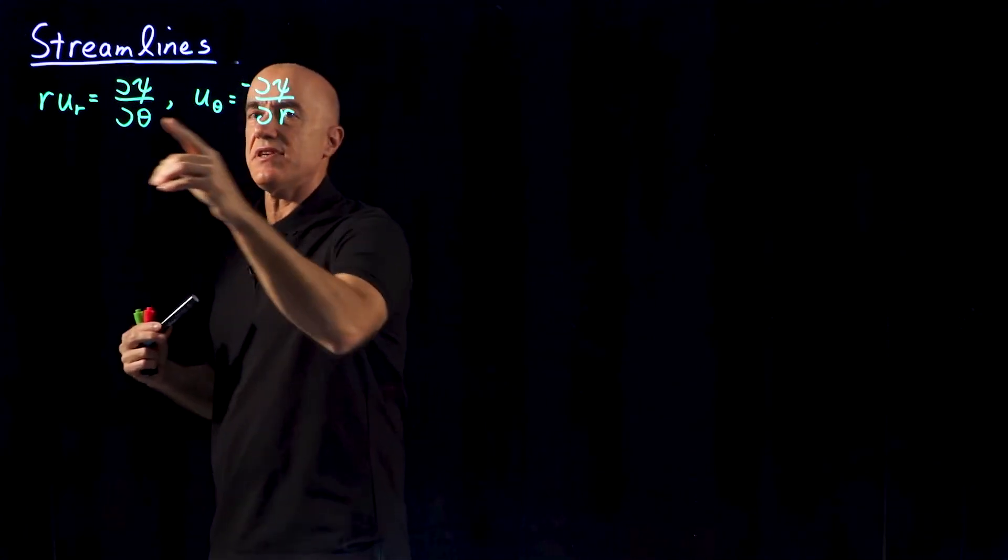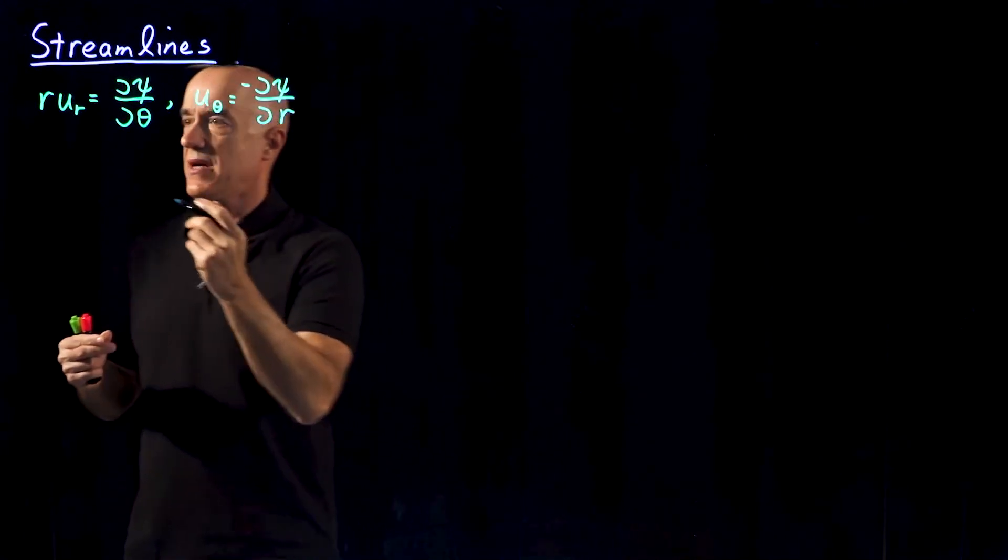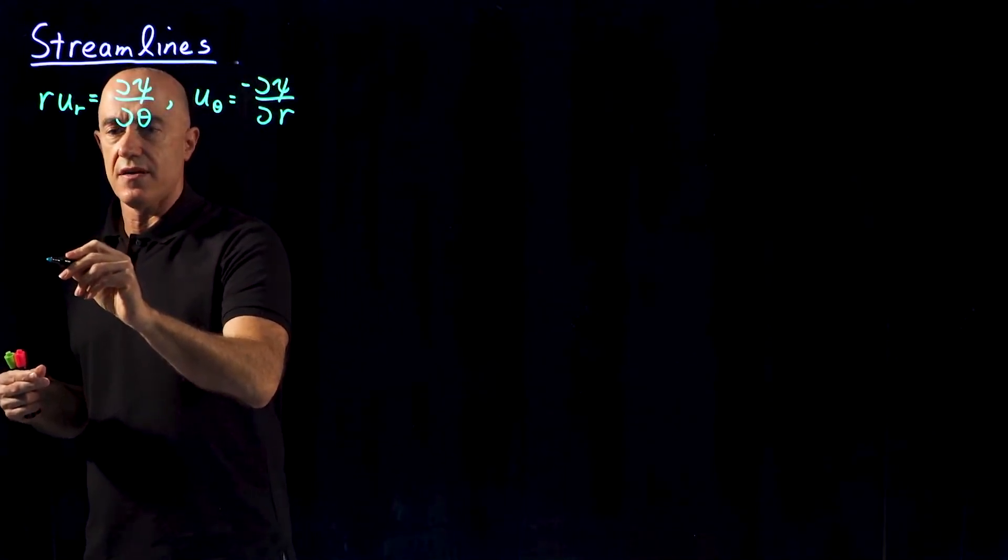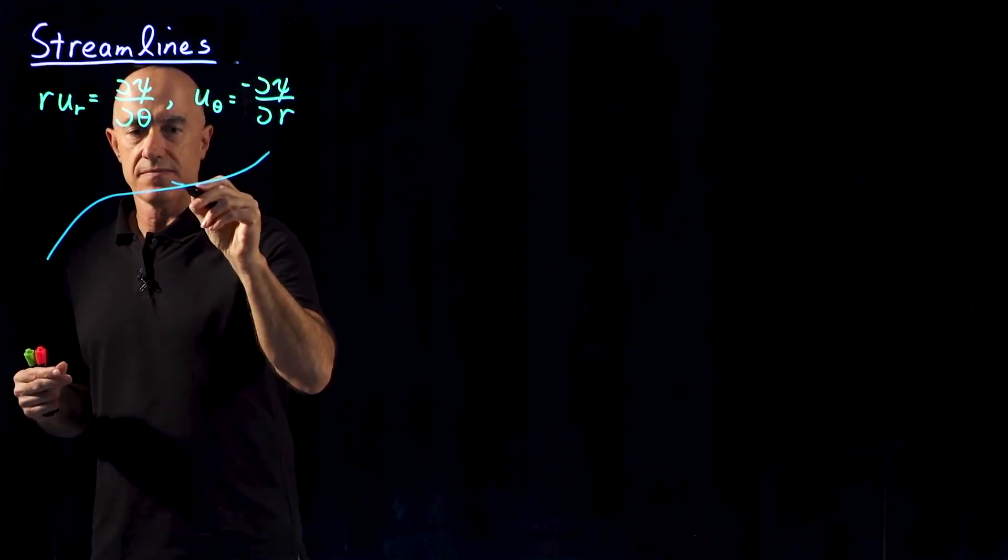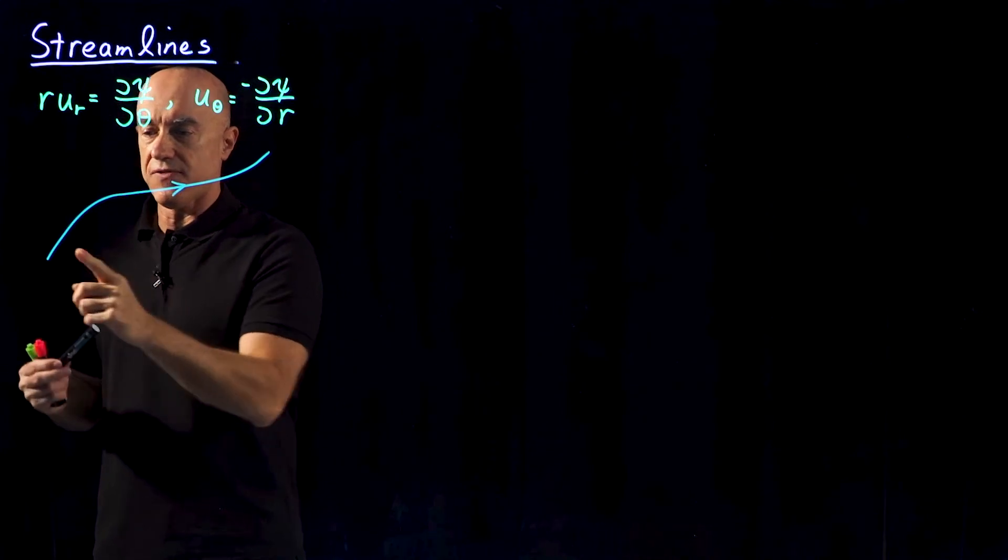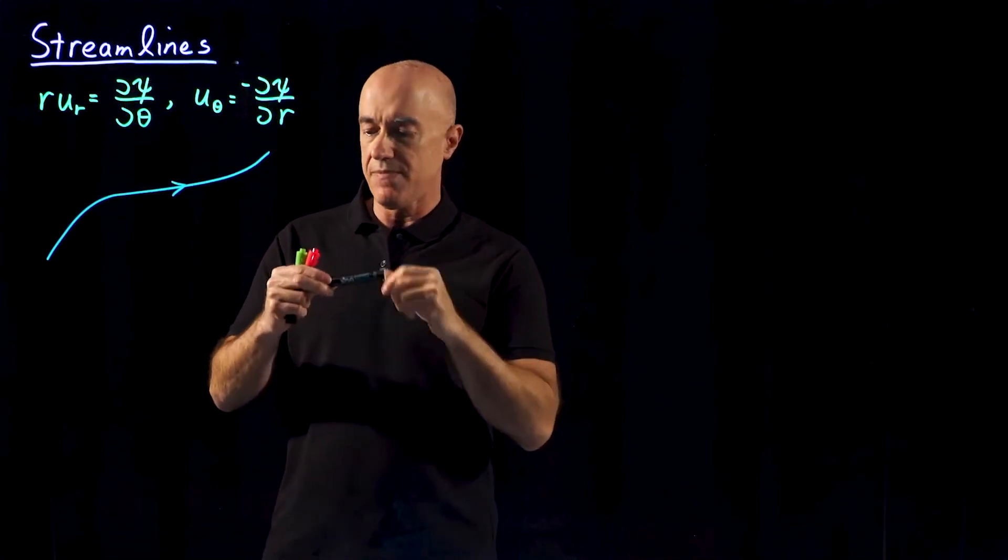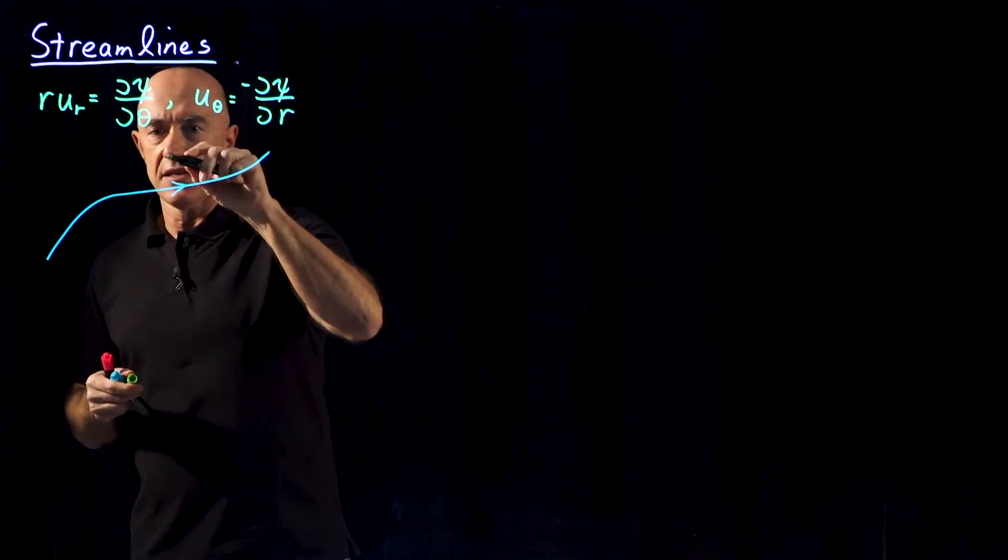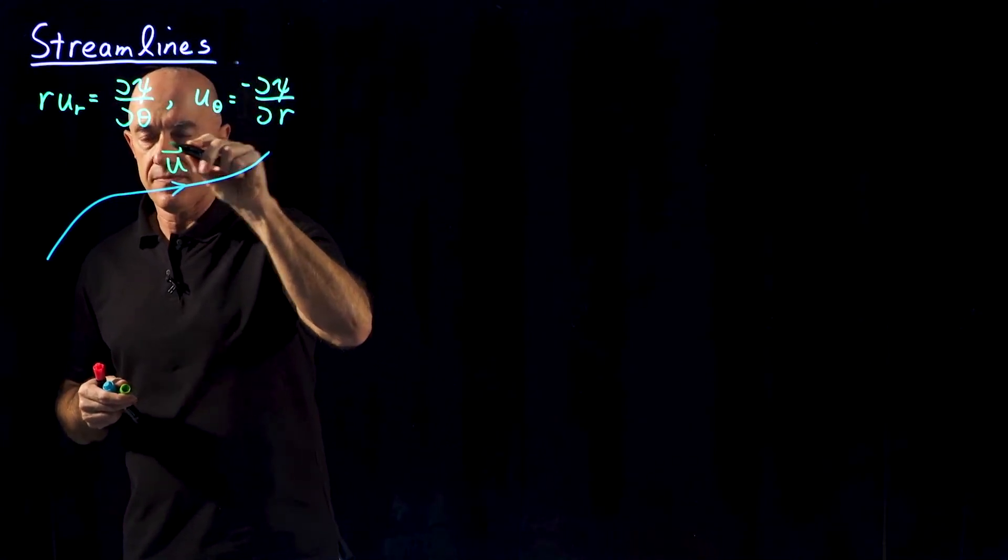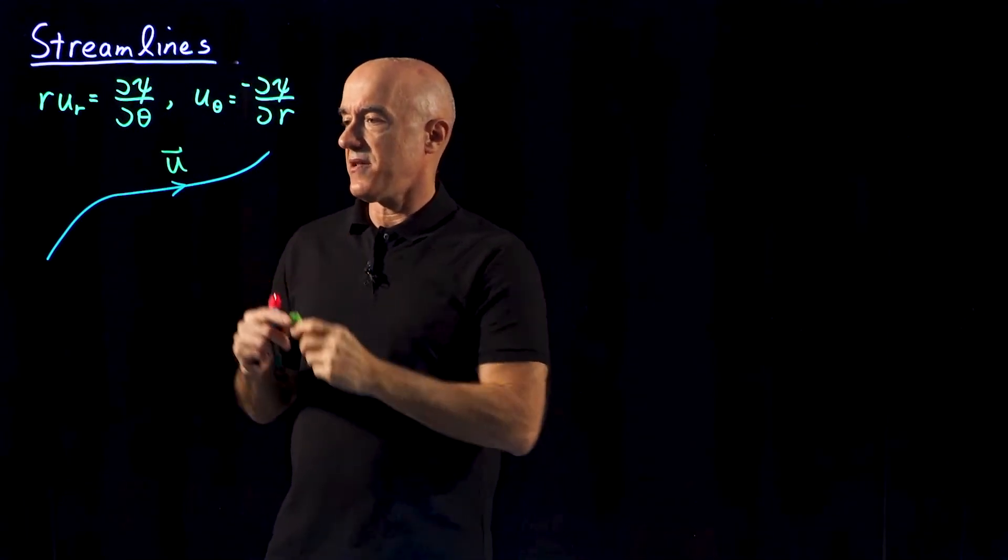So this is the definition of the stream function in terms of the velocity field. Now if we draw what's called a streamline of the velocity field, so the fluid then is flowing in the direction of the streamline, then this is the velocity field u. This is a steady flow, so this is independent of time.